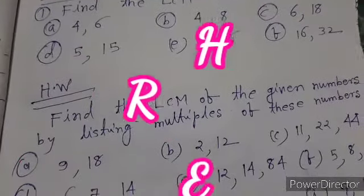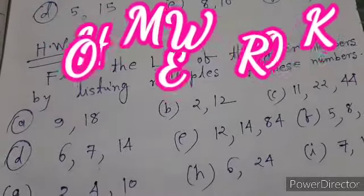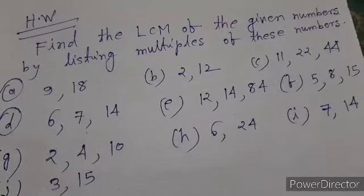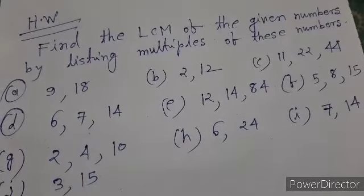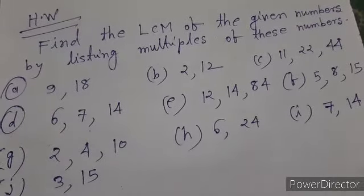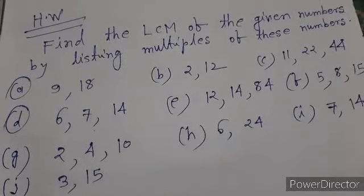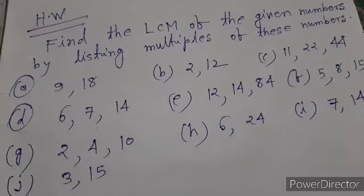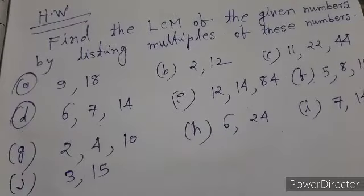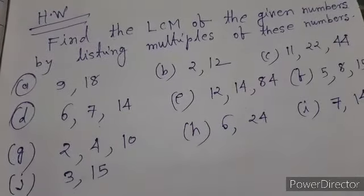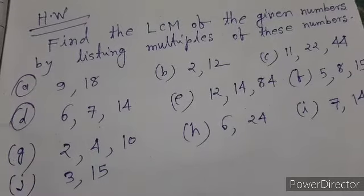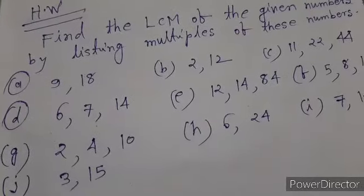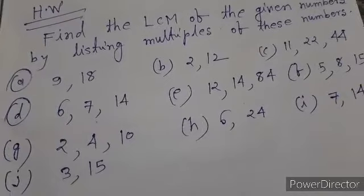Now I give you some home assignment to solve. We have to find the LCM of the given numbers by listing multiples. Question A is nine and eighteen; B is two and twelve; C is eleven, twenty-two, and forty-four; in D, six, seven, and twenty-four; and in J, three and fifteen.